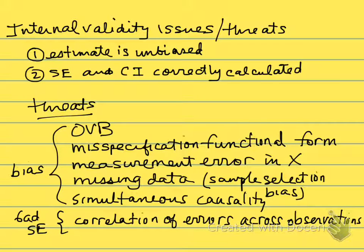Basically, the idea is we want our estimates to be unbiased if we're going to estimate these coefficients, and we also want our standard errors and confidence intervals to be correctly calculated. We'll have bias and won't be having correct standard errors and confidence intervals when there's a problem with internal validity.